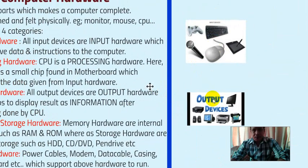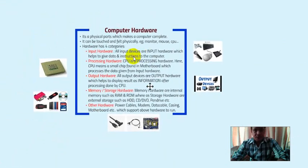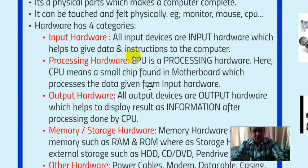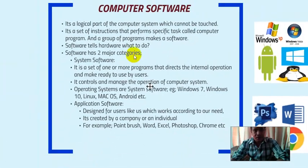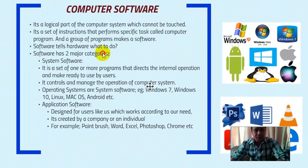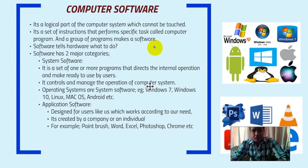Now let's go to the software part. Computer software is the logical part of the computer system which cannot be touched. Hardware like a keyboard or mouse we can touch, but we cannot touch software. For example, YouTube — can you touch YouTube? Microsoft Word — can you touch it? No. If you touch the screen, you are touching the monitor, not the software. So it is just a logical part of the computer system.